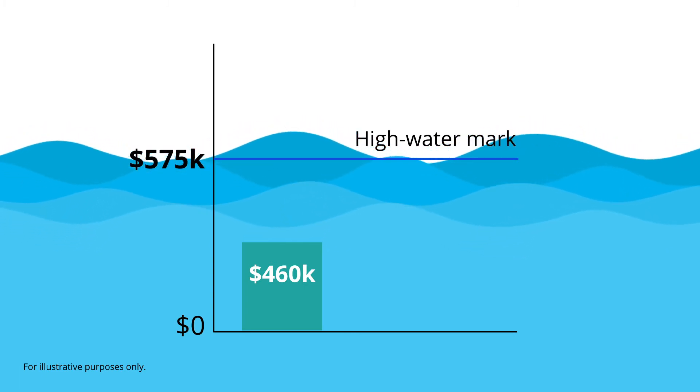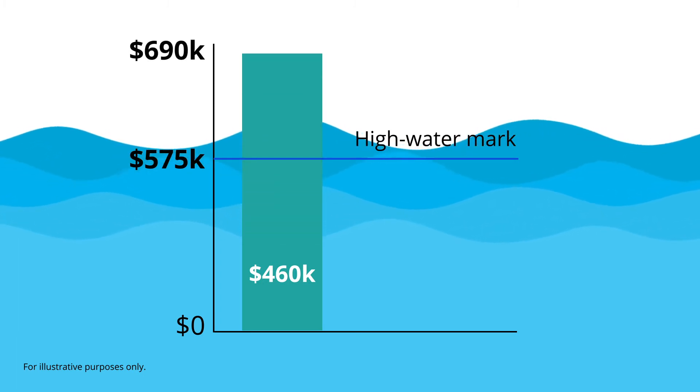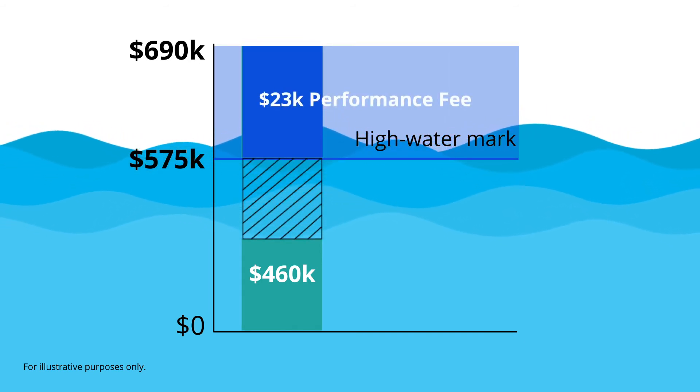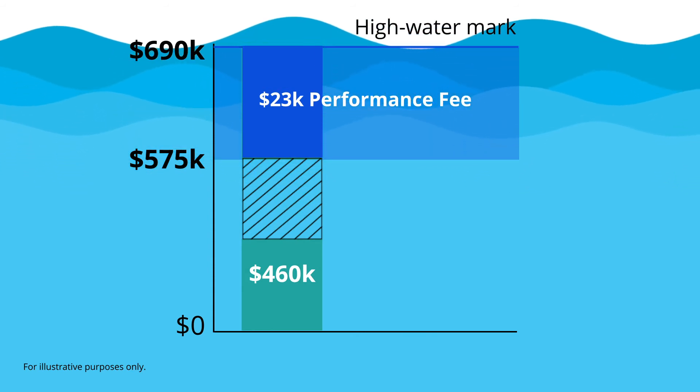Assume the fund now earns a profit of 50%, raising the account value to $690,000. With a high watermark in place, all gains from $460,000 to $575,000 are disregarded. Only the gains above the high watermark are subject to performance fees, owing the manager $23,000. The new high watermark is set at $690,000.